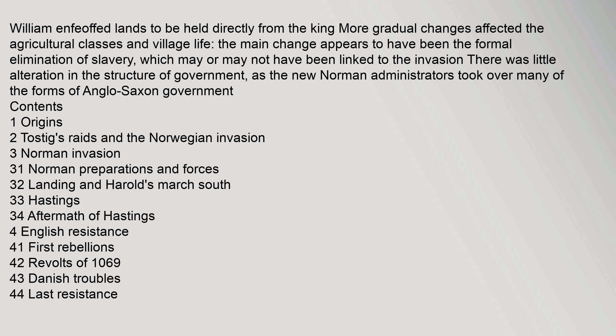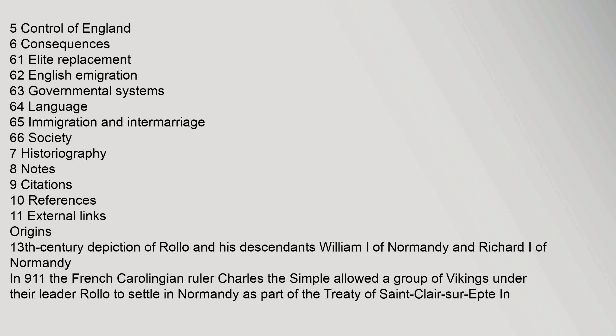More gradual changes affected the agricultural classes and village life. The main change appears to have been the formal elimination of slavery, which may or may not have been linked to the invasion. There was little alteration in the structure of government, as the new Norman administrators took over many of the forms of Anglo-Saxon government.